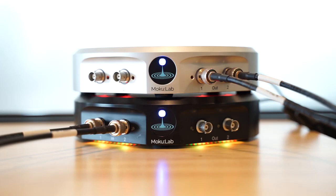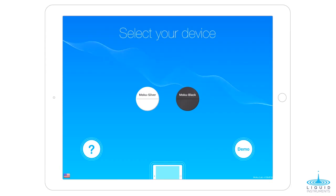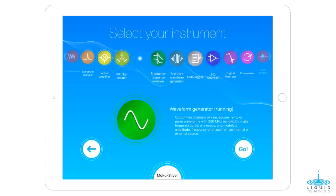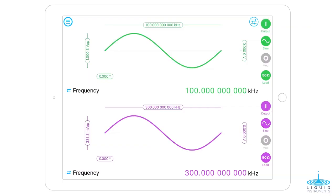It's super easy to configure any Moku to any of the 12 instruments. Let's connect to the silver Moku and launch the waveform generator. We generate two sine waves, one at 100 kHz and another at 300 kHz. Then, importantly, sync the phase between these two signals.